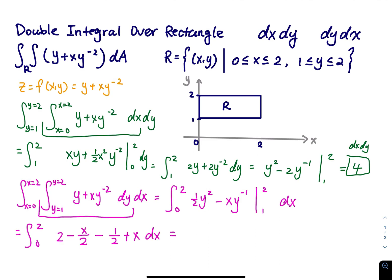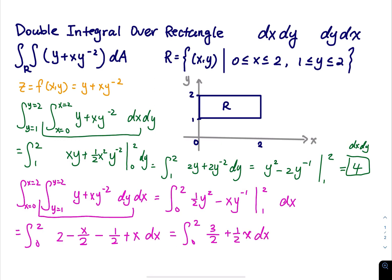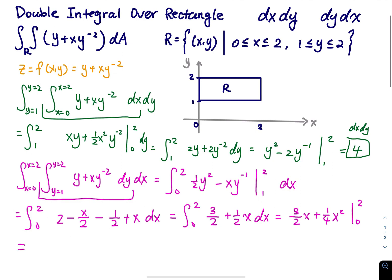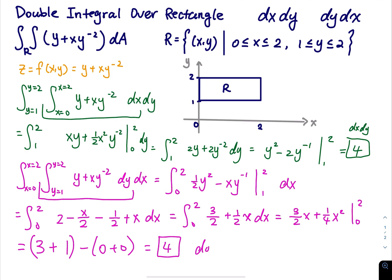The integral of 3 over 2 plus one-half x is 3 over 2 times x plus one-quarter x squared. Evaluated from 0 to 2: plugging in 2 gives 3 plus 4 over 2, which equals 3 plus 1, and plugging in 0 gives zero. So the result is also equal to 4 — the same answer obtained from the dy dx integral.